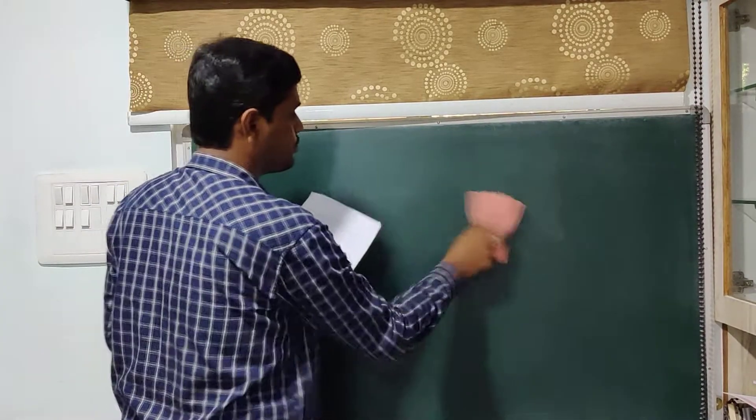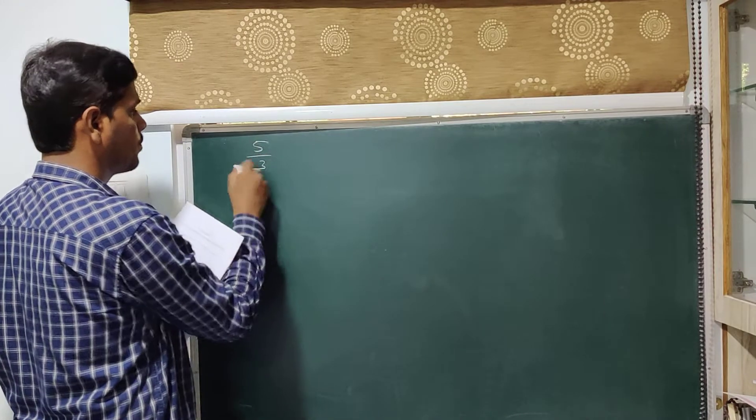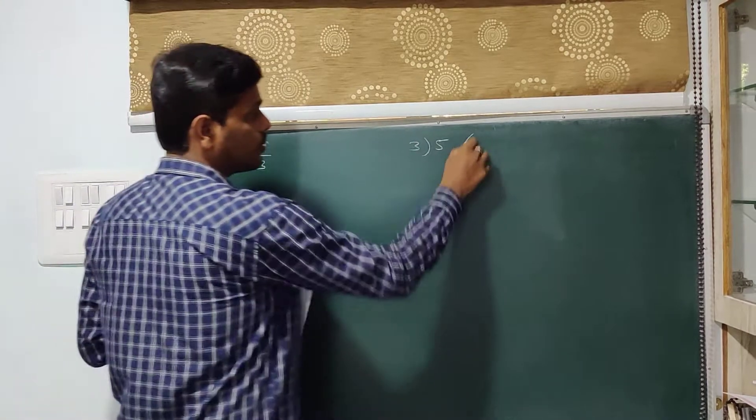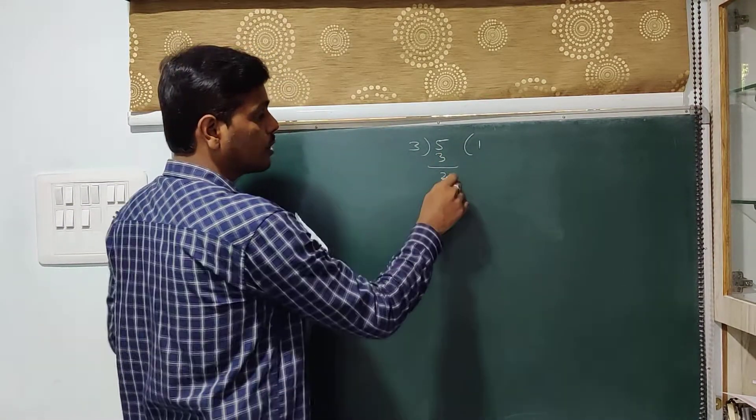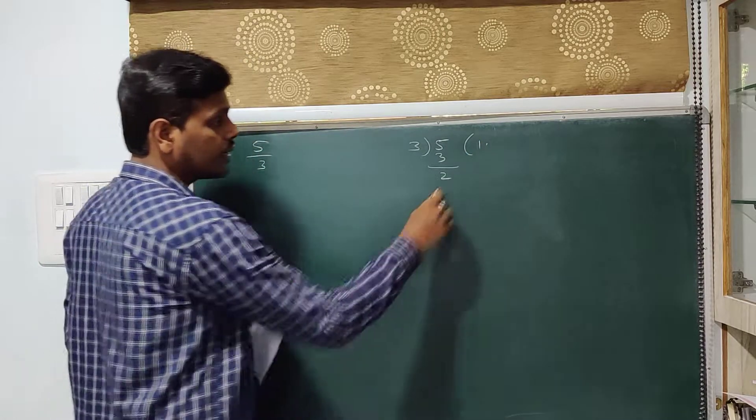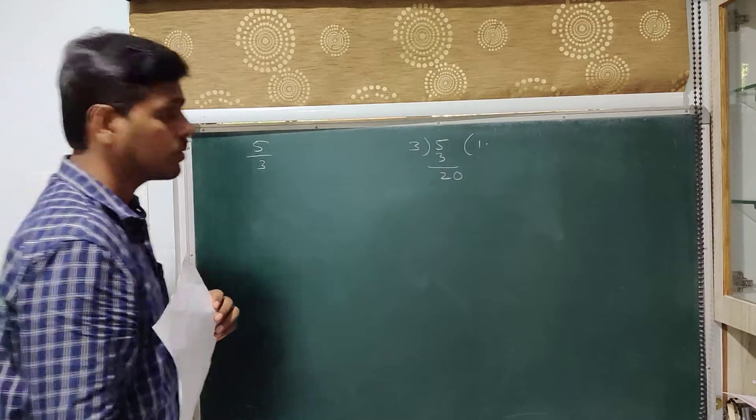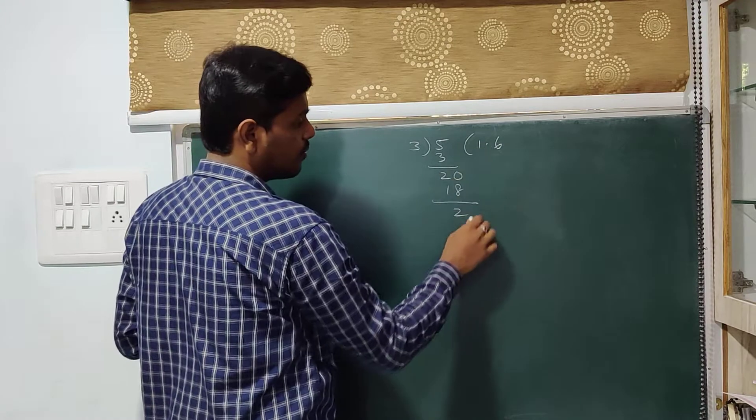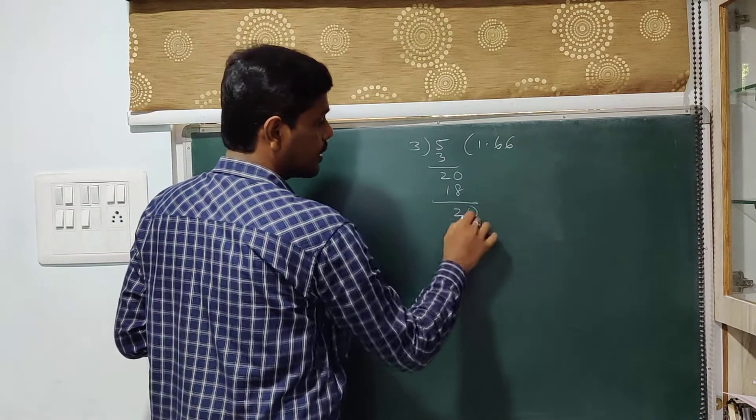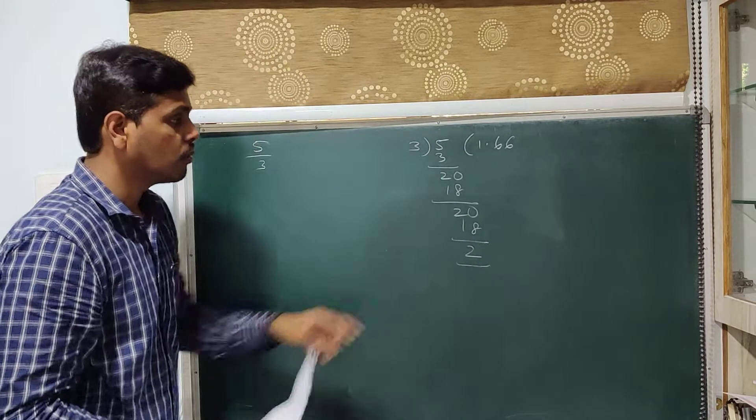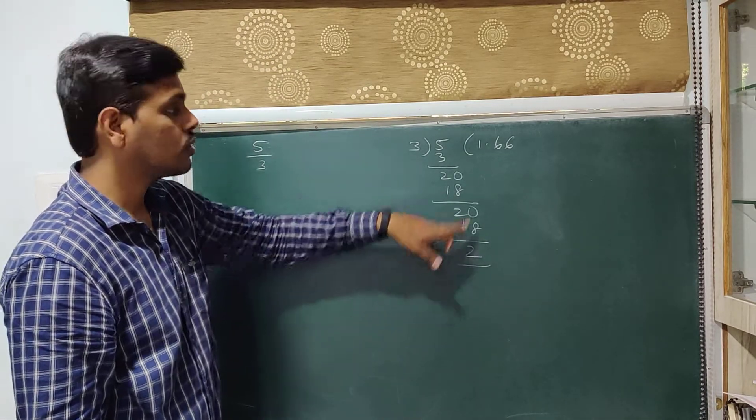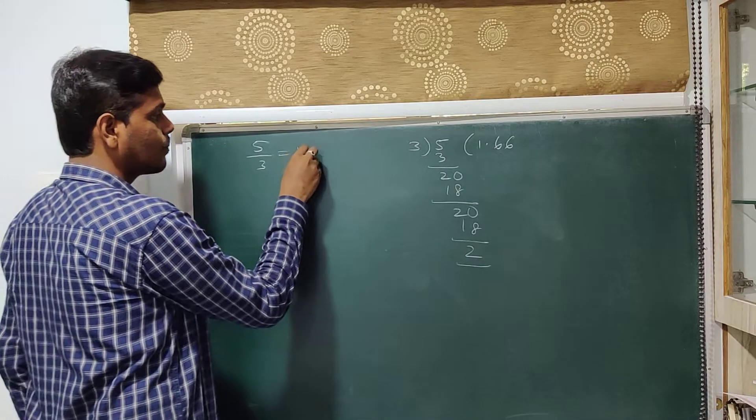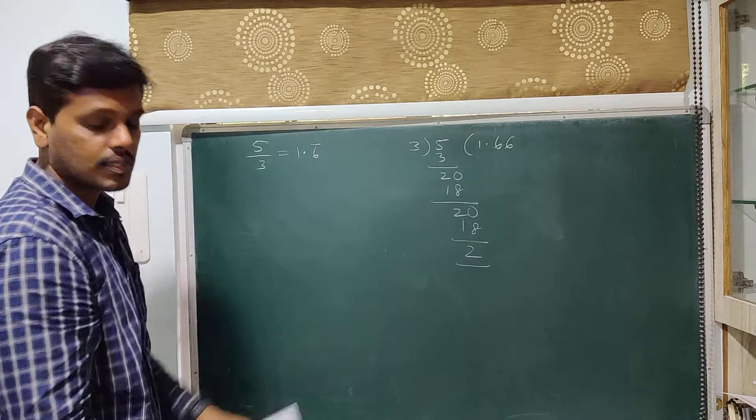Next, 5 by 3. So 5 in the numerator is your dividend, 3 in the denominator is your divisor. 1 times 3 is 3. 5 minus 3 is 2. 2 is less than 3, so take a point. When you take a point you can take a 0. You can take 1 zero at a time. 3 times 6 is 18. Left over is 2. 2 is less than 3. You have a point, so you can take 1 zero. 3 times 6 is 18. Again, remainder is 2. So by this you can observe that the remainder 2 keeps on repeating. So consequently here 6 keeps on repeating. Since 6 keeps on repeating, I can say it is 1.6 bar. That bar indicates that 6 keeps on repeating.